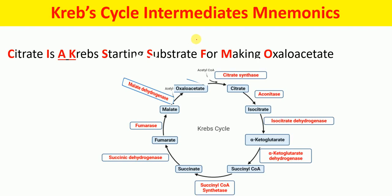Mnemonics for Krebs cycle intermediates: 'Citrate Is A Krebs Starting Substrate For Making Oxaloacetate.' C refers to citrate, I refers to isocitrate, A refers to alpha-ketoglutarate, K refers to alpha-ketoglutarate, S refers to succinyl-CoA, S refers to succinate, F refers to fumarate, M refers to malate, and O refers to oxaloacetate.